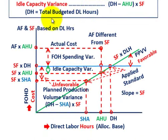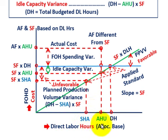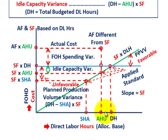Now let's look at these variances in terms of a graph. Along our x-axis, we have our direct labor hours — that's our allocation base for fixed overhead cost. We've got three different amounts: the standard hours allowed based on our standard, the actual hours used for the period, and then those total direct labor denominator hours.